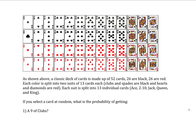As shown above, a classic deck of cards is made up of 52 cards. 26 are black, 26 are red. Each color is split up into two suits of 13 cards each, clubs and spades are black, and hearts and diamonds are red.